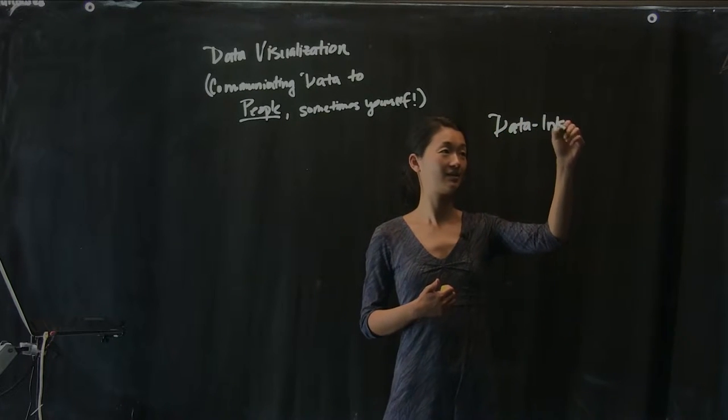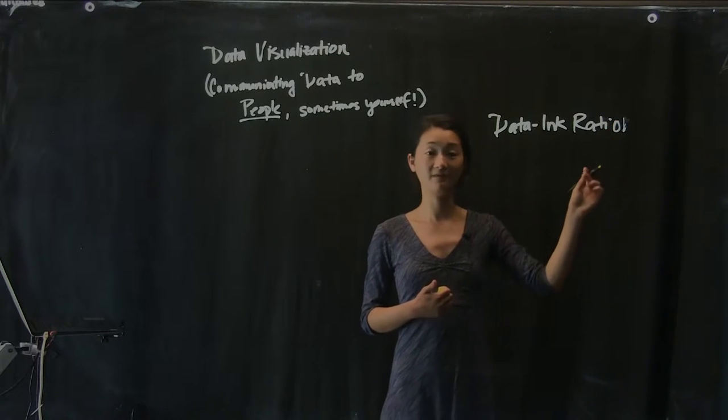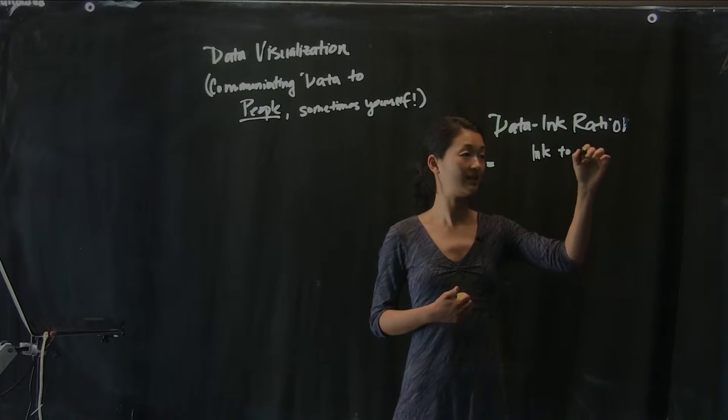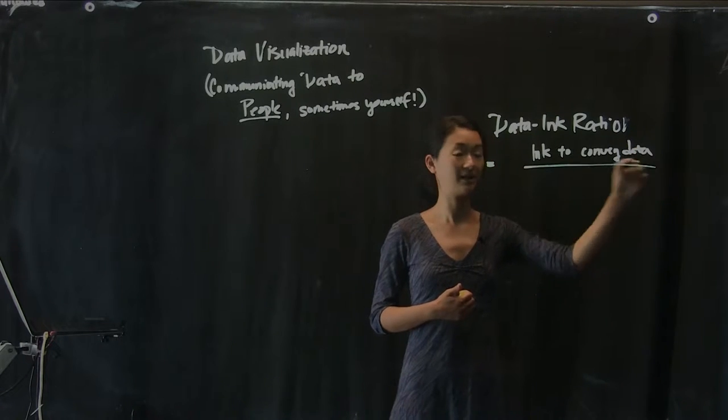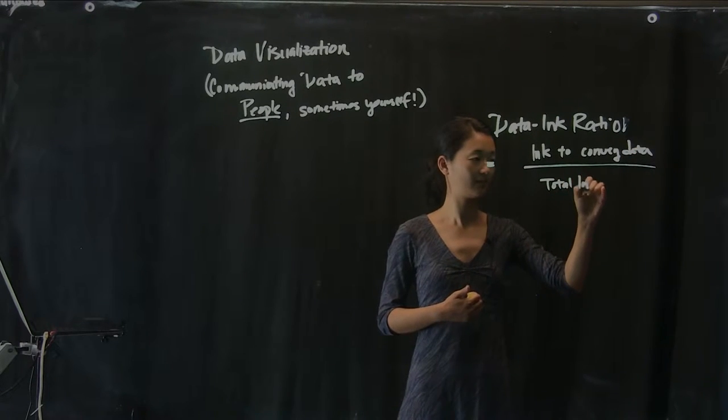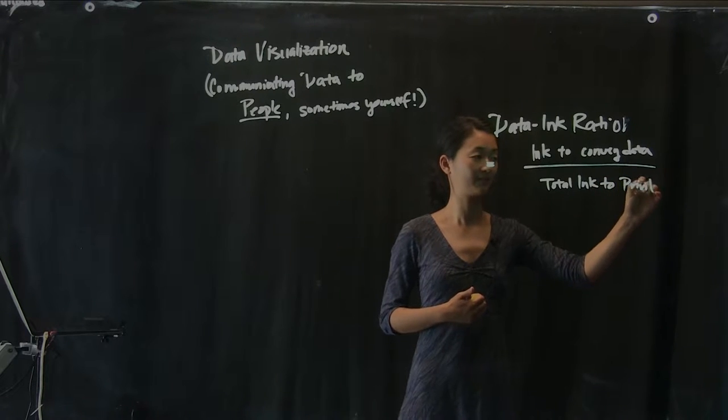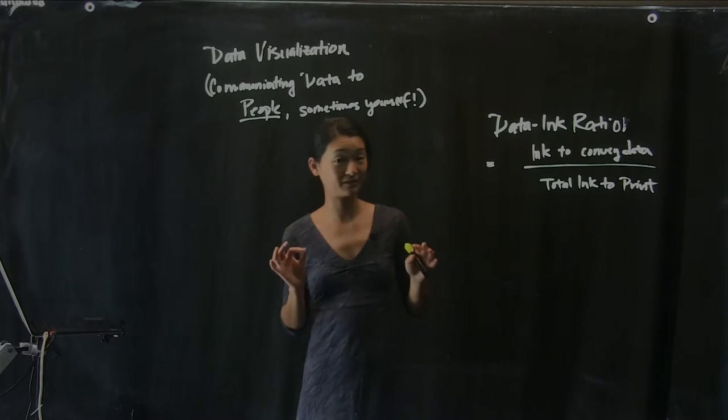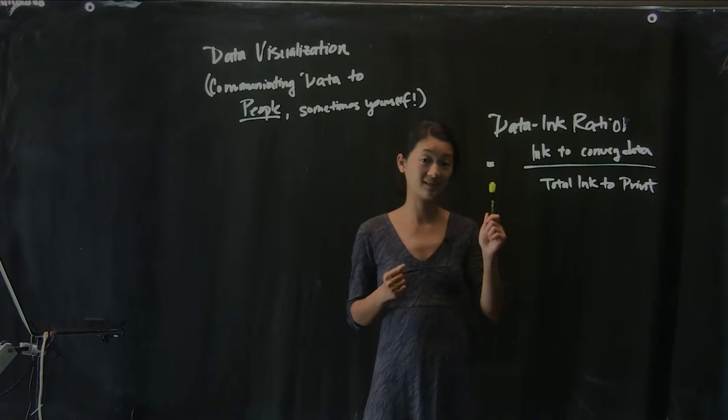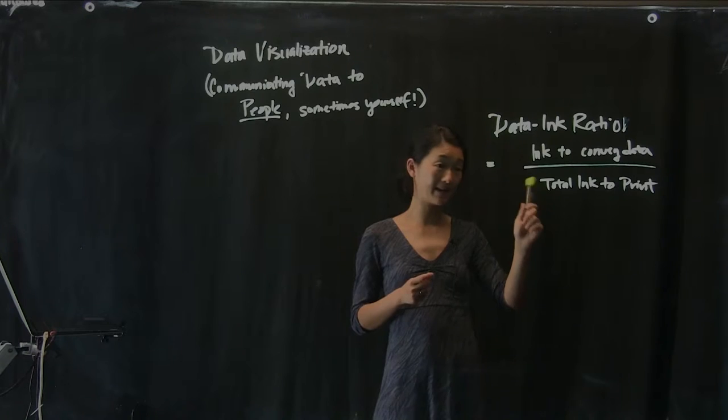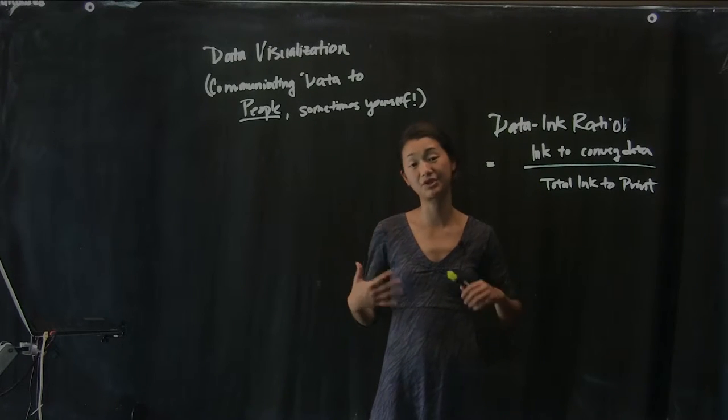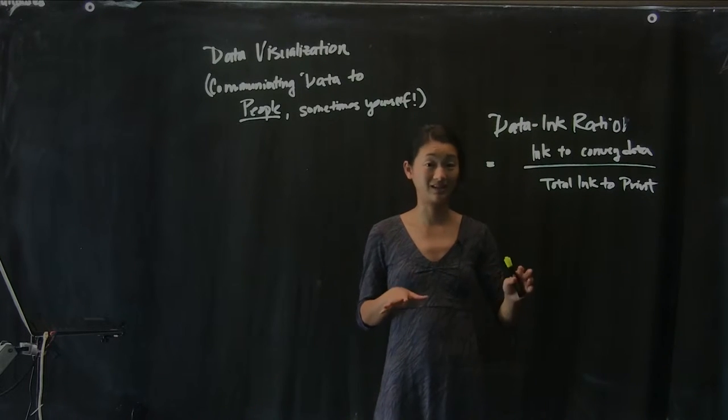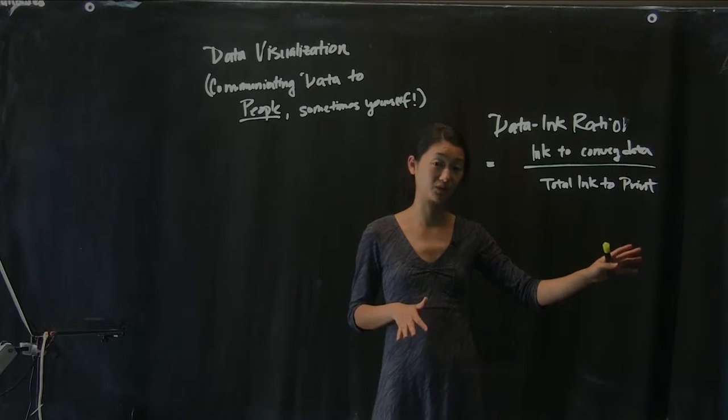And so he coined this term called the data-ink ratio. And it's defined as the amount of ink in the figure to convey data divided by the total ink to print that figure. So in the limit of really listening to Tufte and actually following everything that he says, he says that one must try to maximize this ratio as much as possible. So have as much of the figure devoted to the actual conveyance of information and communicating of data rather than just wasting ink printing a bunch of stuff that doesn't really do much good to anyone.